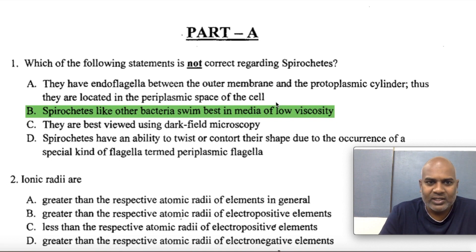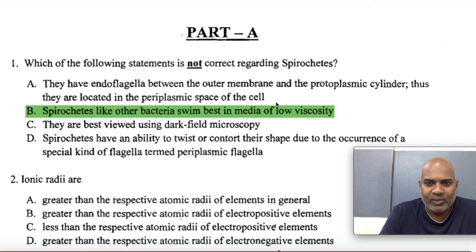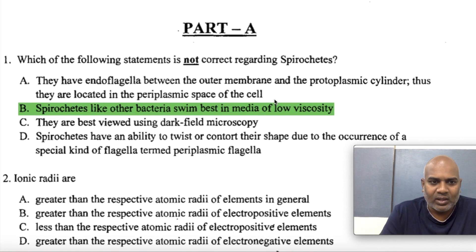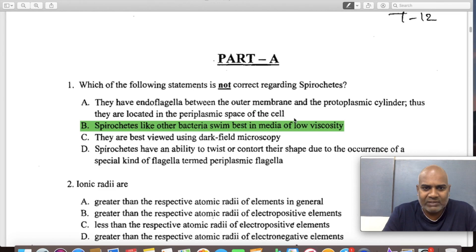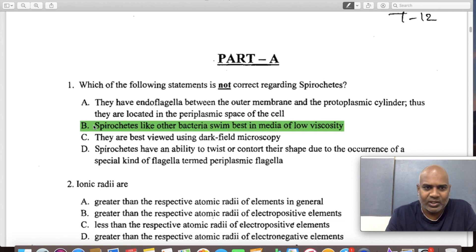Option B states spirochetes, like other bacteria, swim best in media of low viscosity — that's wrong. They actually swim best in high viscosity media. They are best viewed using a dark field microscope. Spirochetes have the ability to twist or contour their shape due to the periplasmic flagella. So the answer is B — B is the incorrect statement.